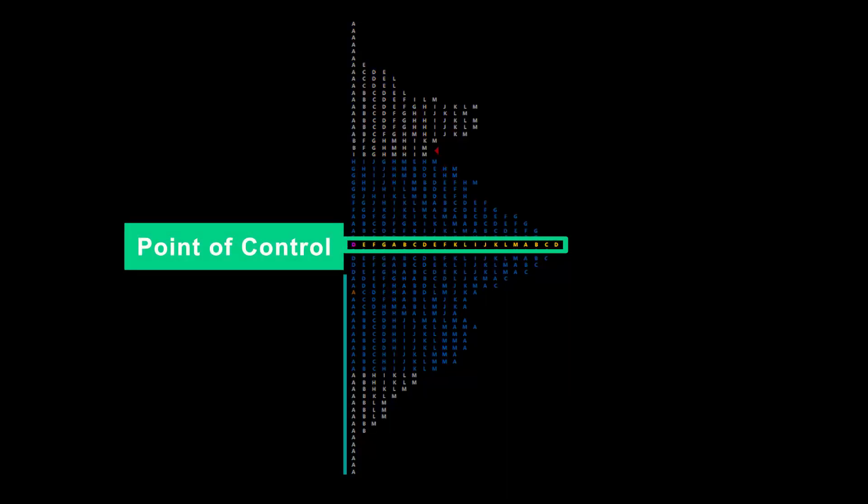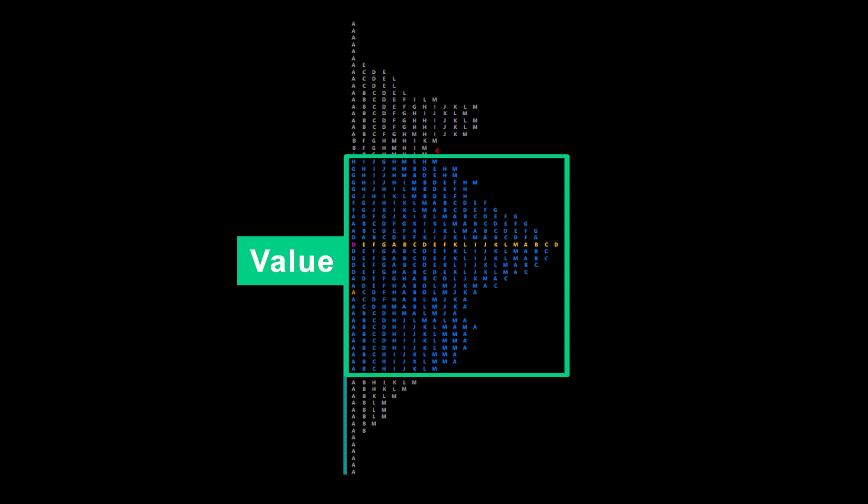If you're looking at a market profile you're likely to see two features. The first is the row with the most TPOs and this is called the point of control — it's the price that was traded most frequently in the 30 minute time period. The second feature is a zone, usually colored, which represents value and contains 70% of the TPOs for the day, as that's how profiles are usually set up.